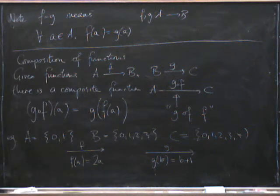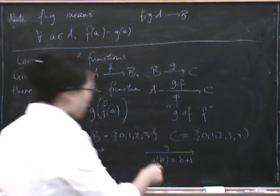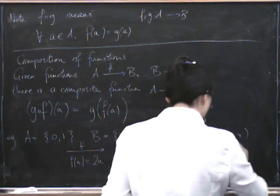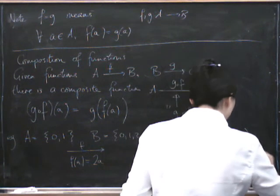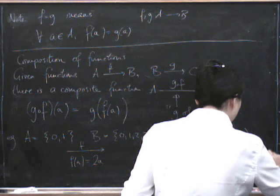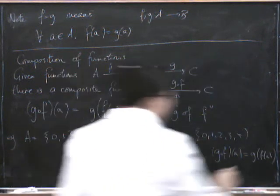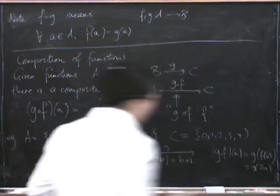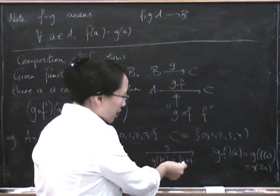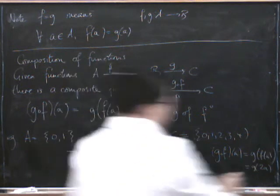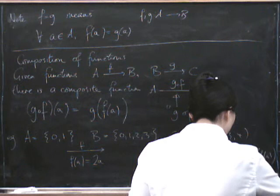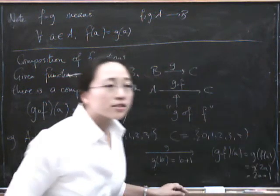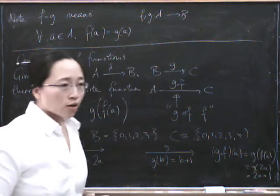In that case if we do F and then we do G afterwards what are we going to get? G composed of F of A equals G of F of A but what's F of A? That's 2A so that's G of 2A and what happens if we plug in 2A? B equals 2A then we get 2A plus 1 so the composite here is 2A plus 1. Hopefully that's just about legible in the bottom right hand corner.